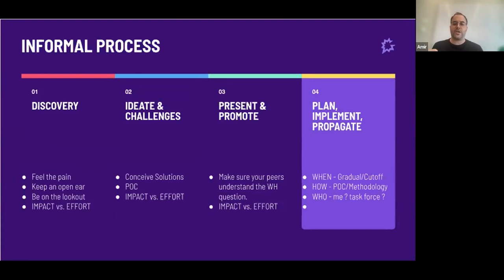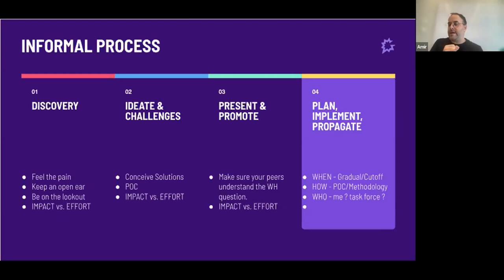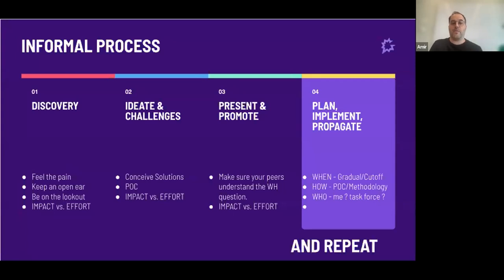When you reach some kind of culmination, you go about and plan, implement, and propagate. When are we going to do it — gradually or is there a cutoff? How are we going to do the POC? Is there a certain methodology? Who's going to implement it — the person who suggested the change, or should we have a task force? Is there anybody else within GONG or the development group outside the guild that we need to inform? It's always a repeating process, and it can be very fast when impact is huge but effort is small.